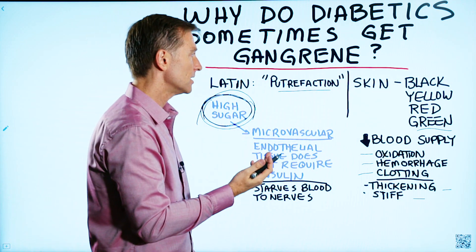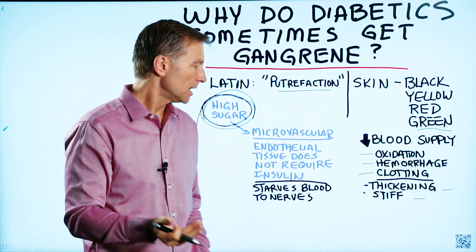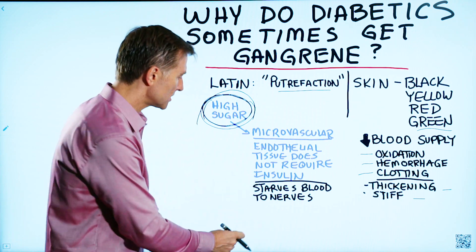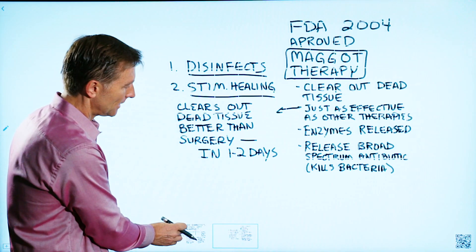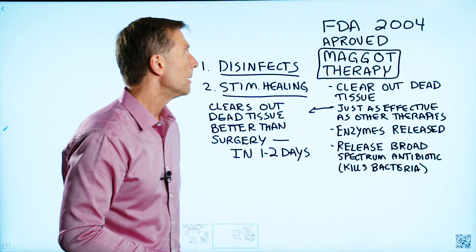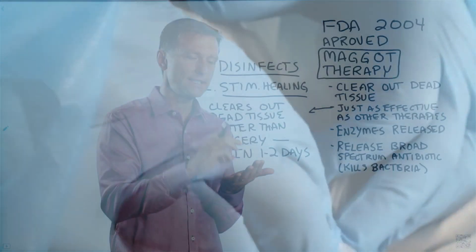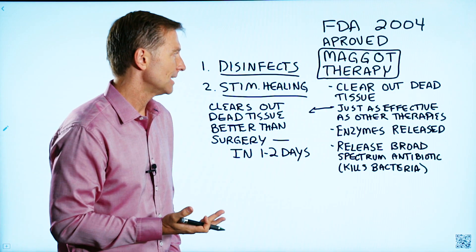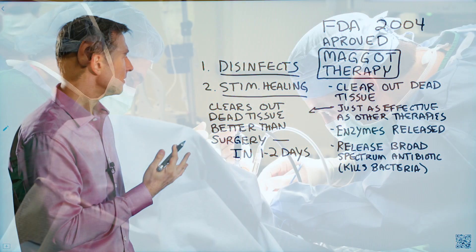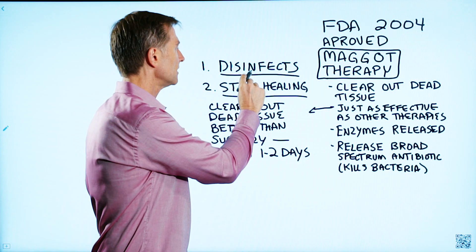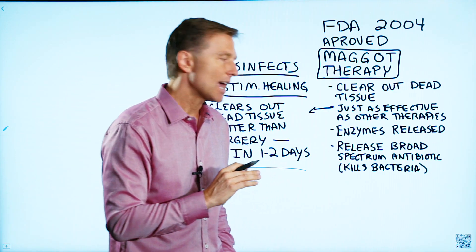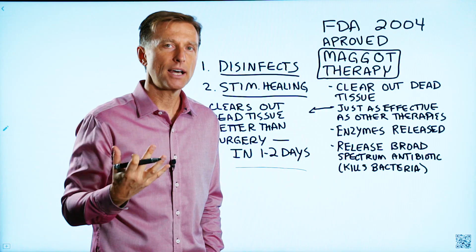But if you already have this situation, there might be a couple of things you can do depending on how severe it is. Let's say you don't want to get surgery and remove your toes, and maybe you have certain tissues that are not so bad — maybe you have an ulcer or some infection. The FDA did approve in 2004 maggot therapy, and I'm not being sarcastic. They actually put maggots in the ulcer to clean up the dead tissue. Certain types of maggots eat the dead tissue and don't eat the healthy tissue, so they clear out the infection. They're finding it's even more effective than certain surgeries because it disinfects the area and stimulates healing. Within one or two days it could be totally cleaned out. These maggots actually release enzymes, and they also release a broad-spectrum antibiotic to kill off the infection.